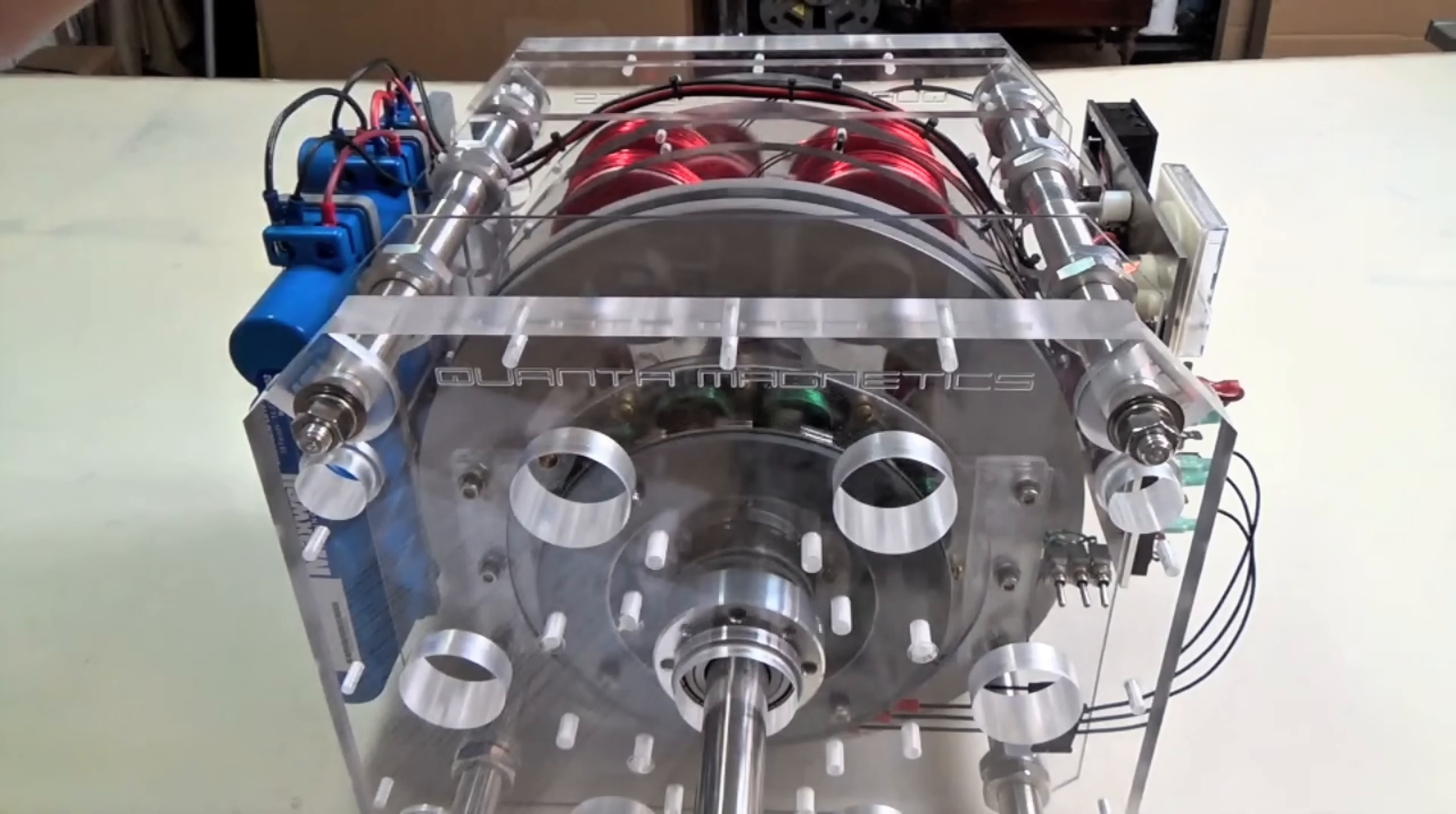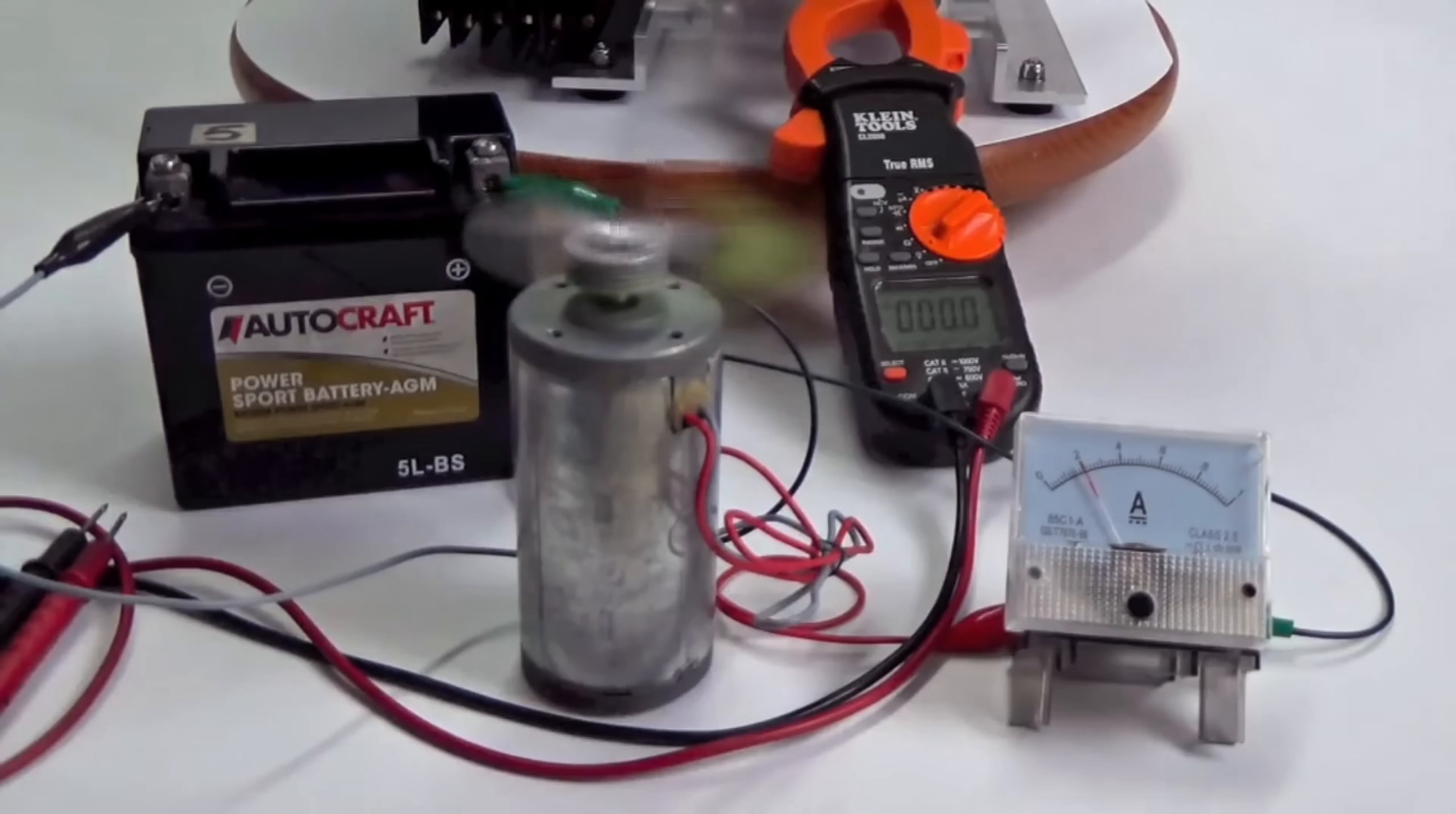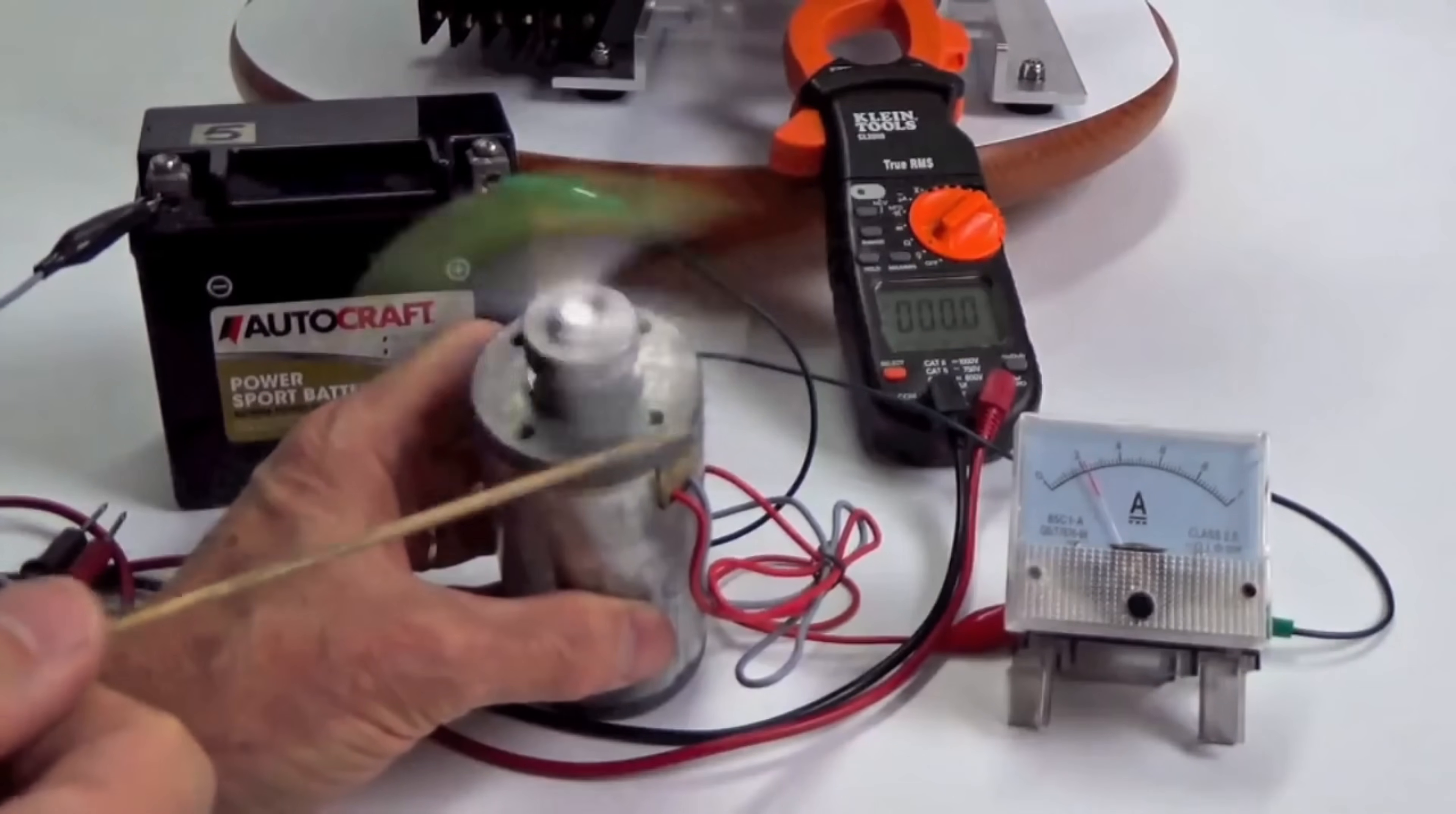The first key point: This stored momentum is like a reservoir of energy. Once the flywheel is up to speed, it takes very little additional effort to maintain its rotation, even under load. In effect, the wheel's own inertia is doing much of the work of staying in motion.